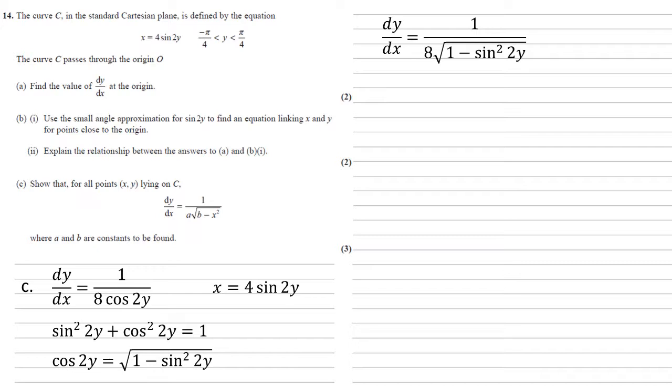But we know that x equals 4 lots of sine 2y. So rearranging that, we get that sine 2y equals x over 4. So sine squared 2y is x over 4 all squared. Now we want this in a form with just x squared. We want to get rid of that over 4.